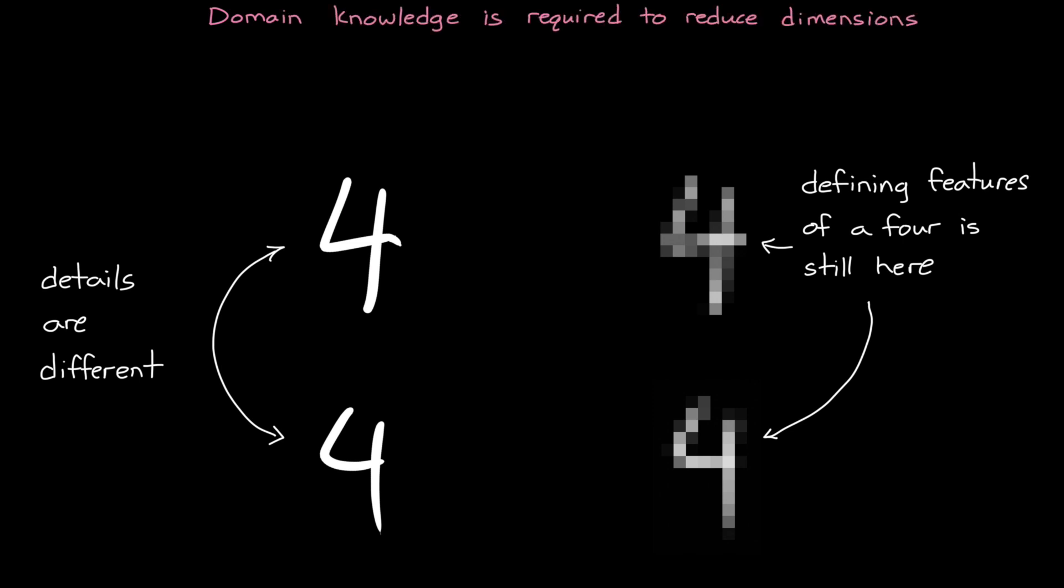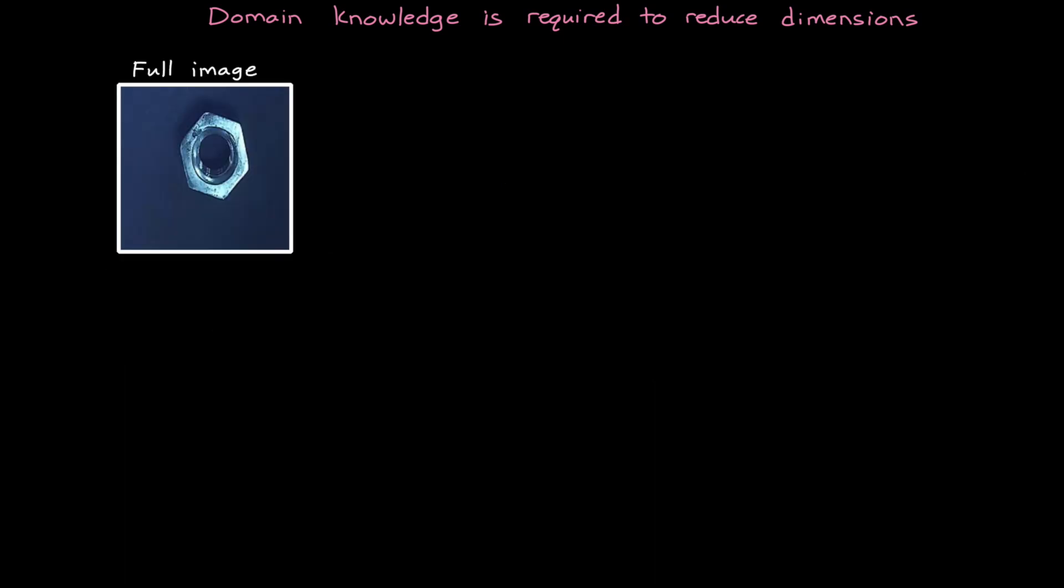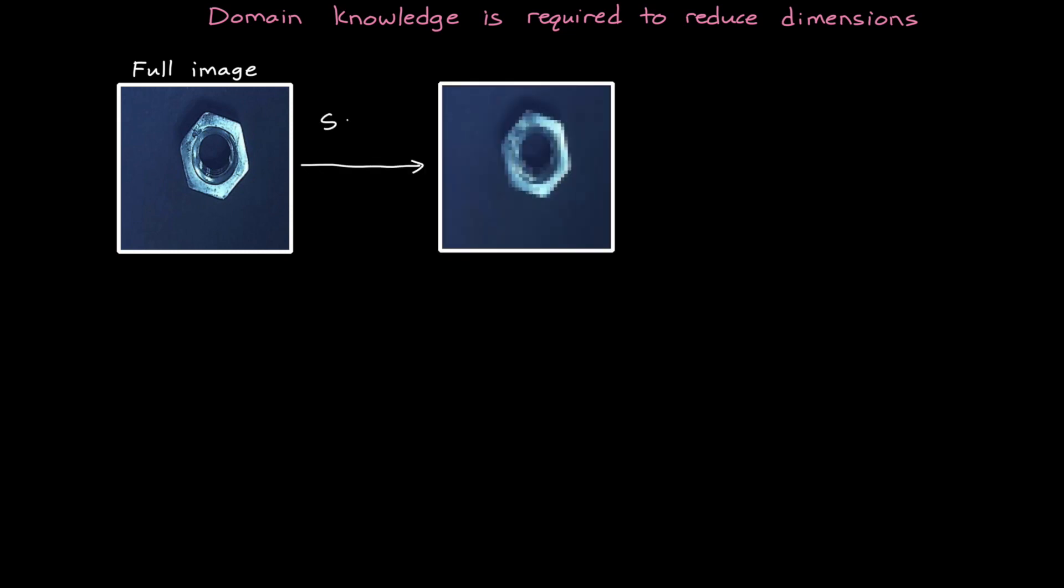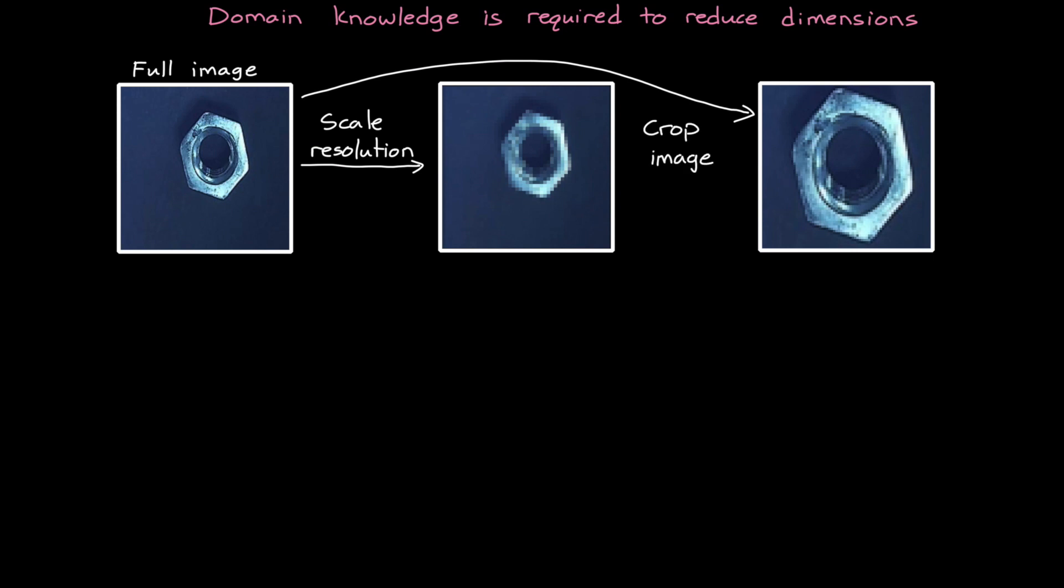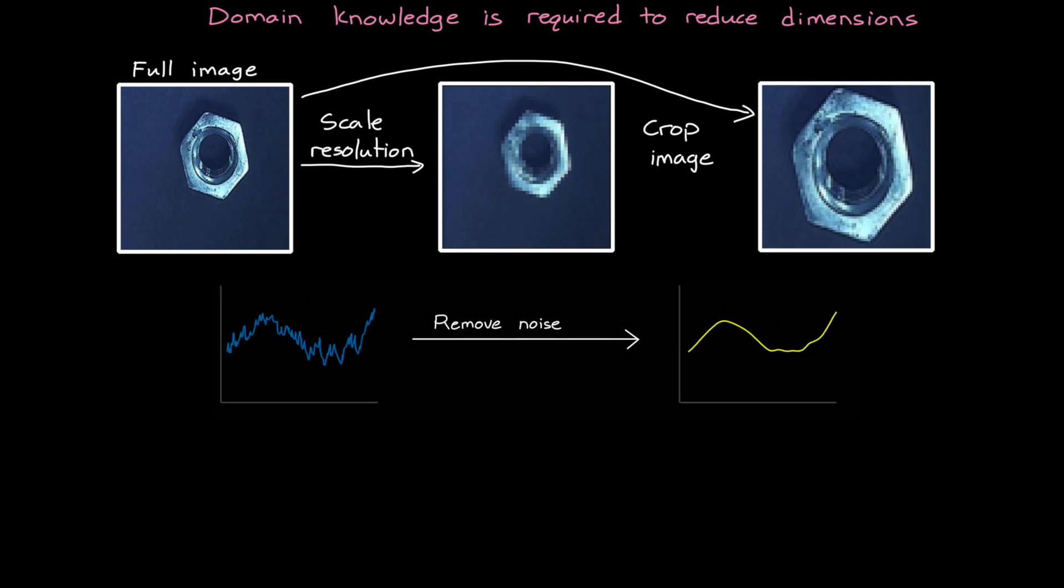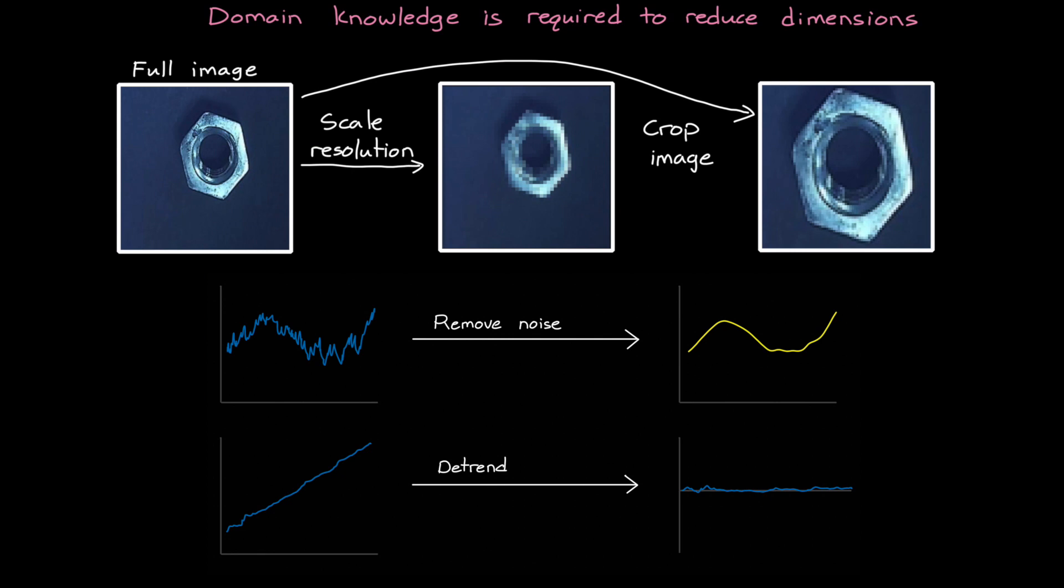Now, a drawback to dimensionality reduction is that you have to understand your data well enough that you can reduce the dimensions, but not so far as to accidentally remove critical information from your dataset. For example, say we want to train a network that can visually identify manufacturing defects in hex nuts. It wouldn't be a good idea to reduce the size of these images by just scaling them down. The flaws or the patterns we're looking for are quite small, and we would lose the detail that distinguishes them. In this case, a better dimensional reduction approach might be to crop the images instead. Now there are a lot of different ways to reduce dimensionality, like for example removing noise or removing trends from the data, but however you do it, the key takeaway is that we want to remove any components from our dataset that we know aren't important so that the network doesn't have to learn that it's not important.